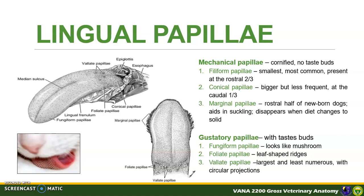For the gustatory papillae, their names indicate their shape. Fungiform papillae look like tiny mushrooms at the rostral two-thirds of the tongue, scattered together with the filiform. Foliate papillae are a series of leaf-shaped ridges located at the dorsolateral border of the caudal one-third of the tongue, immediately rostral to the palatoglossal arch. The vallate papillae have circular projections. They are the largest and the least numerous among the papillae, located at the dorsal of the caudal third of the tongue, surrounded by a circular cleft, and do not project above the surface of the tongue. There are at least three to six vallate papillae in dogs, but commonly there are four.